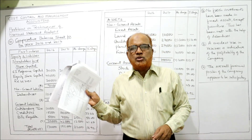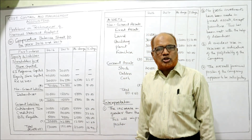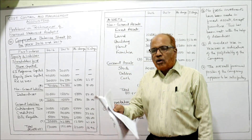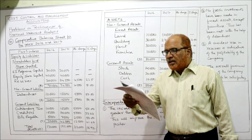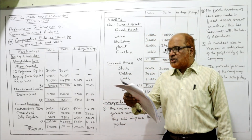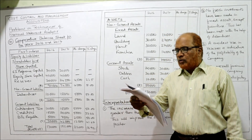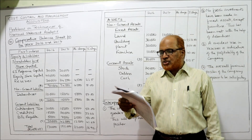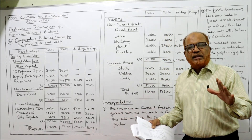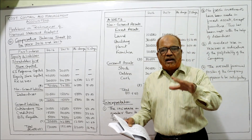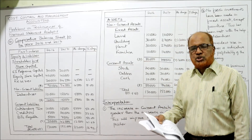Before starting problem number 10, I expect my viewers to have a printout of the problems which I have given in the link under my description. The problem states: the following are balance sheet extracts for the years 2016 and 2017 along with supporting notes to the accounts. We have to prepare the comparative balance sheet and comment on the financial position.